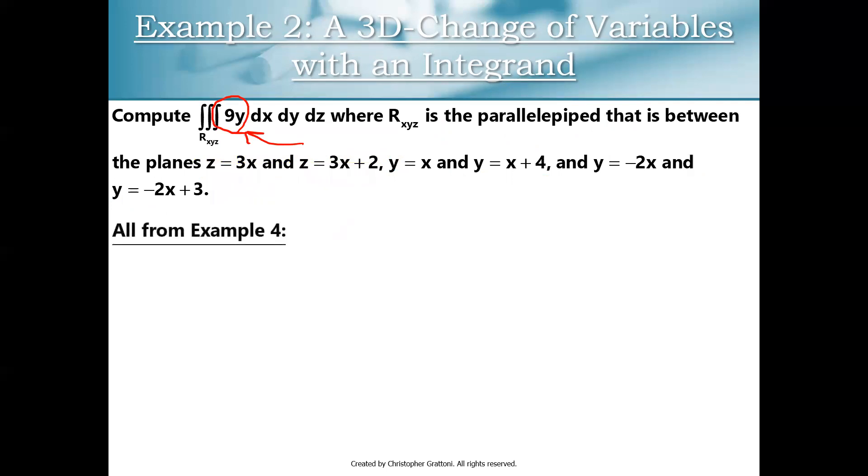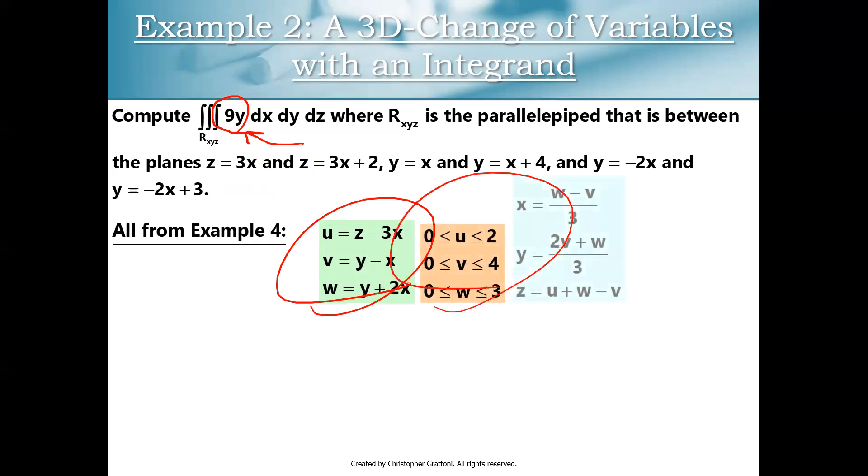So I could take stuff from that previous example. So I'm just going to go through here and get my change of variables from the previous video, the limits of integration from the previous video, and then when we solve for x, y, and z in terms of u, v, and w. I can grab that from the previous video as well. Even my volume conversion factor, I'm not going to recompute that Jacobian determinant. I'm just going to take that from the previous video.